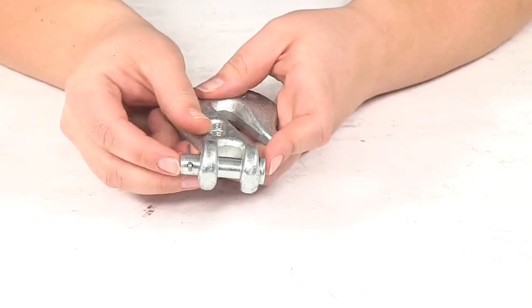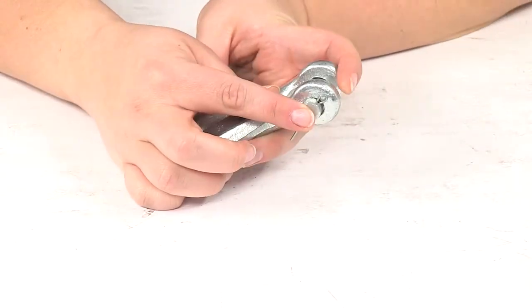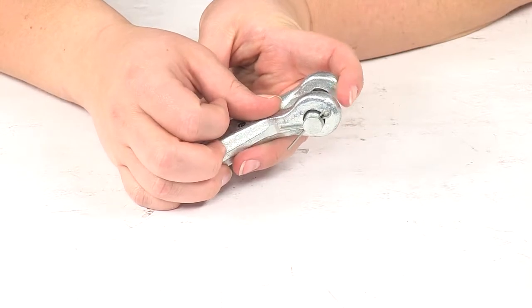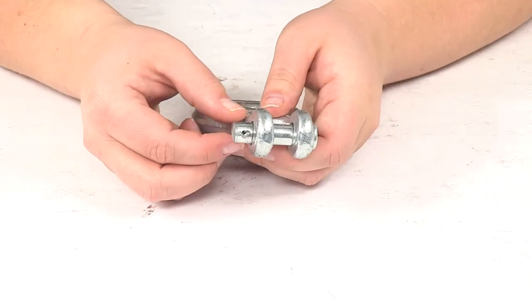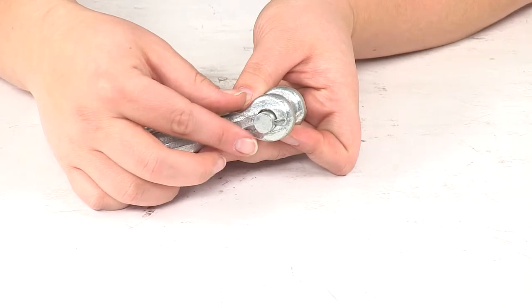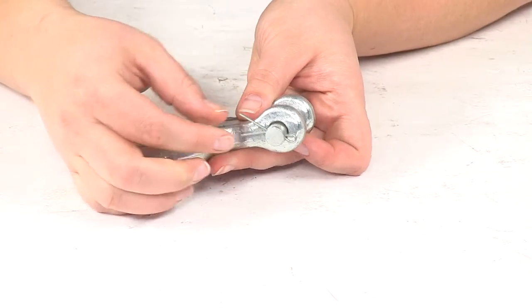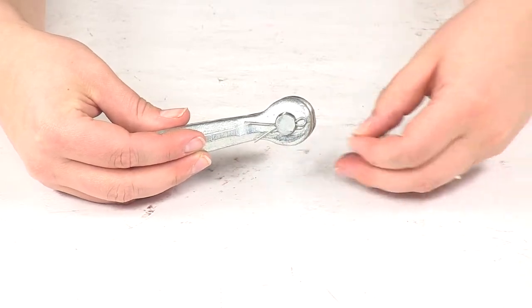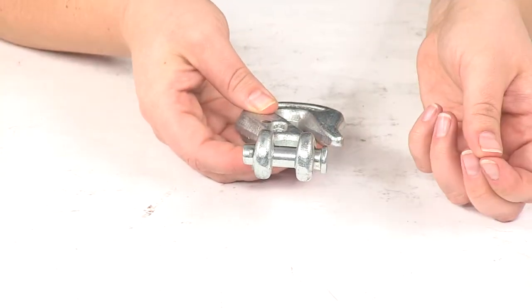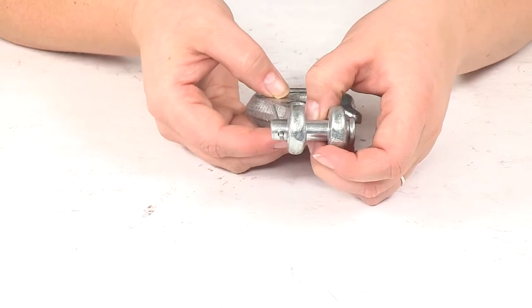It includes the clevis pin and cotter pin to keep it attached to your chain. To get that on and off, you just need some pliers to squeeze the ends of the cotter pin so it'll pull through the hole on the other side. Once you pull that out, the clevis pin can also be removed.